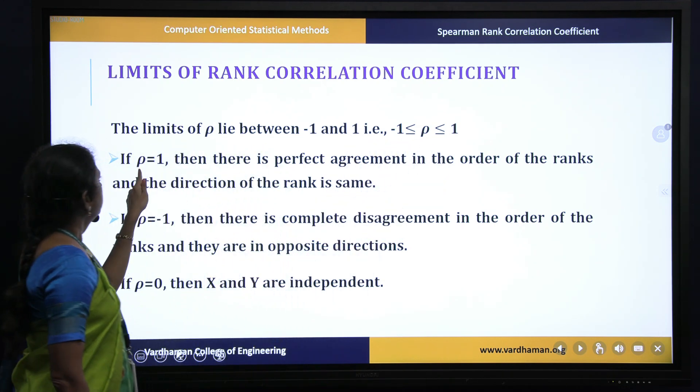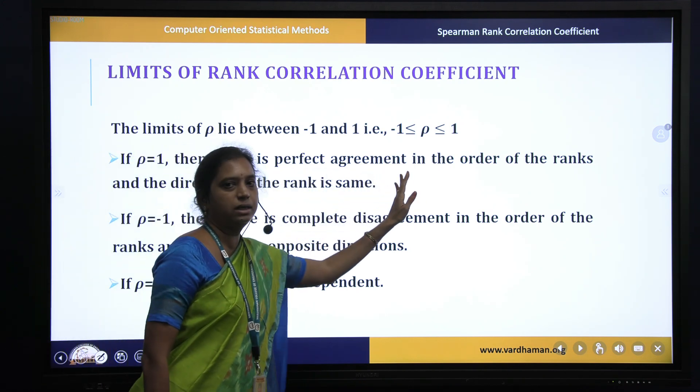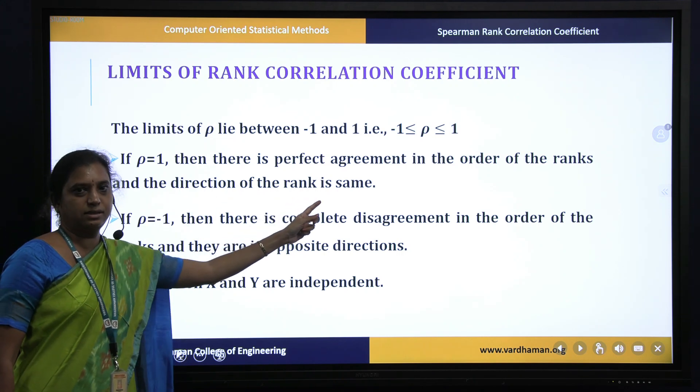If the Spearman rank correlation coefficient is equal to 1, then there is a perfect agreement in the order of the ranks and the direction of the rank is same.